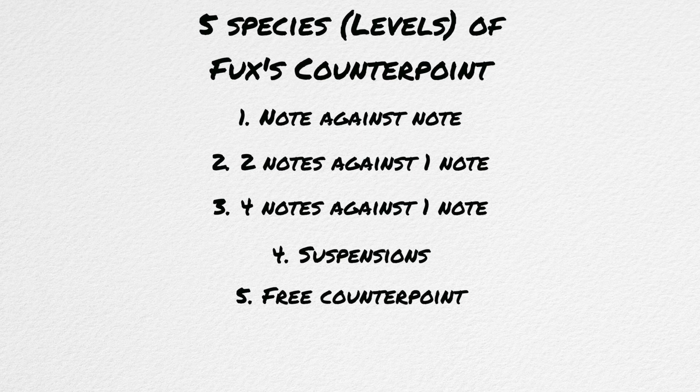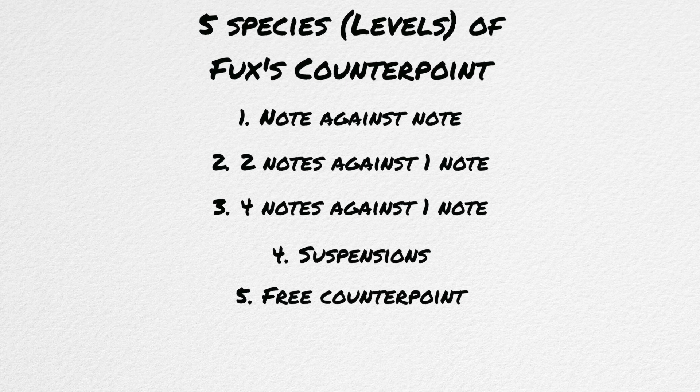Fuchs's method was broken down into five species or five levels of gradually increasing difficulty, and by the end of the method, the student could write counterpoint freely. Before jumping in, there's a few things to go over.